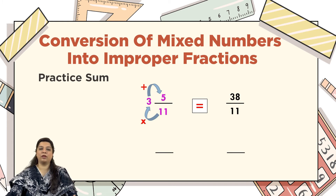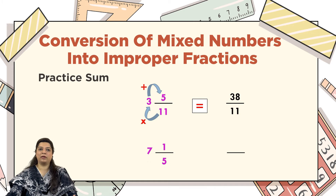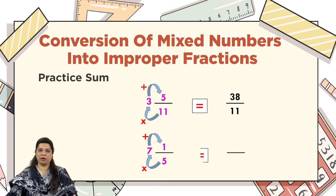The whole number is absorbed into the new numerator. Another example: 7 whole number 1 upon 5. First, multiply the denominator by the whole number part — 5 multiplied by 7 equals 35. Then add this to the numerator 1, giving a new numerator of 36. So the answer is 36 upon 5.